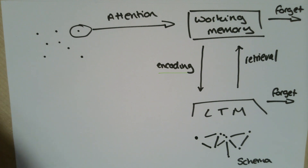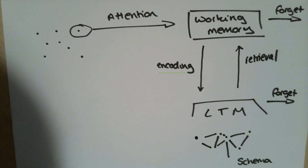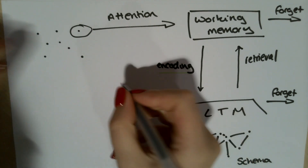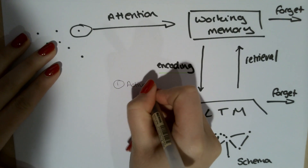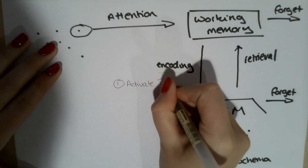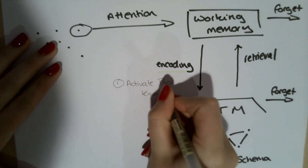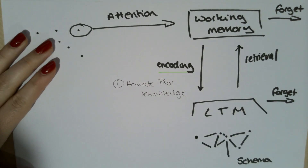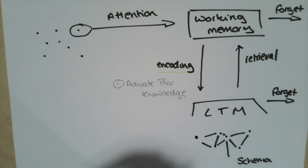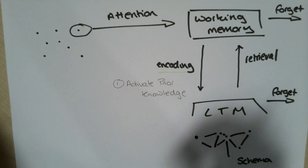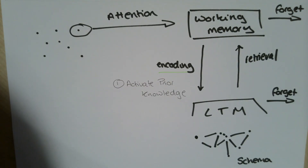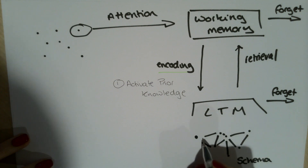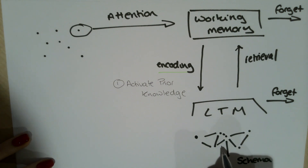In order to encode things effectively into our long-term memory we need to do three things. The first thing we need to do is activate prior knowledge. In order to link our new piece of information to our existing schema we need to recall information that we already know and make an explicit link to the new information. That allows us to see how the new information links to our existing schema and explicitly creates these links within our understanding.